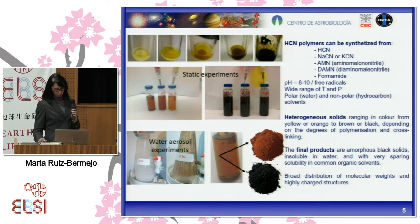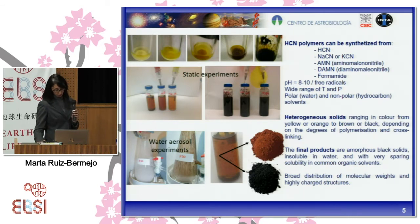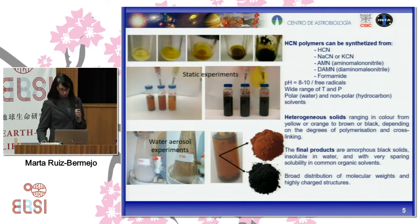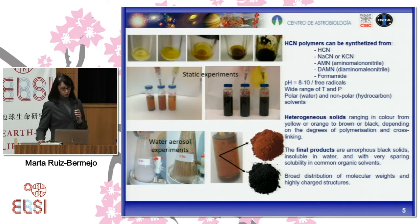Hydrogen cyanide polymers are heterogeneous solids, ranging in color from yellow to orange to brown to black depending on the degree of polymerization and cross-linking. The final product of co-reaction is an amorphous black solid, insoluble in water and with very apparent insolubility in common organic solvents. The hydrogen cyanide polymer also presents a broad distribution of molecular weight and a highly complex structure, which renders full structural characterization of this macromolecular system particularly difficult.